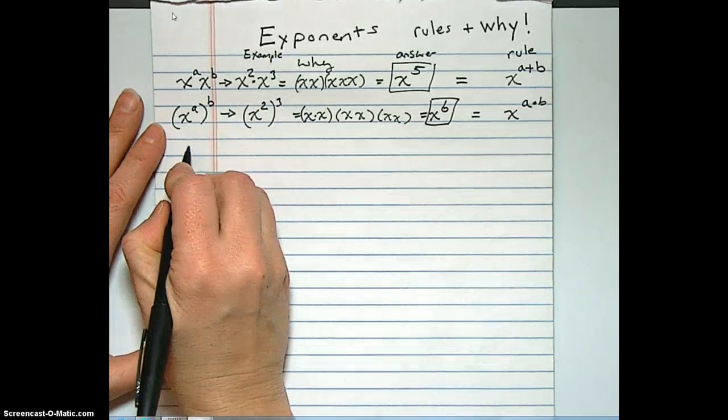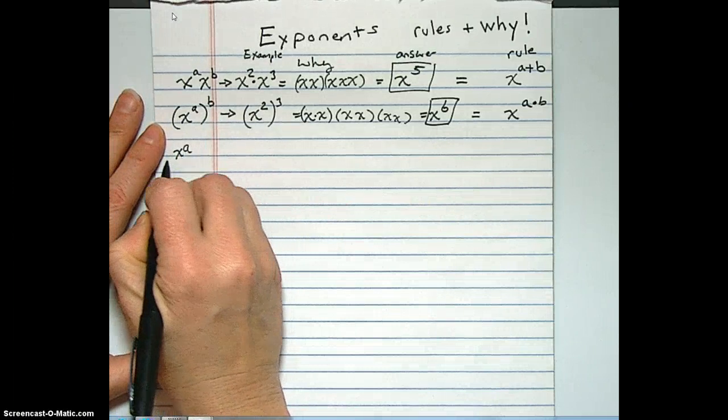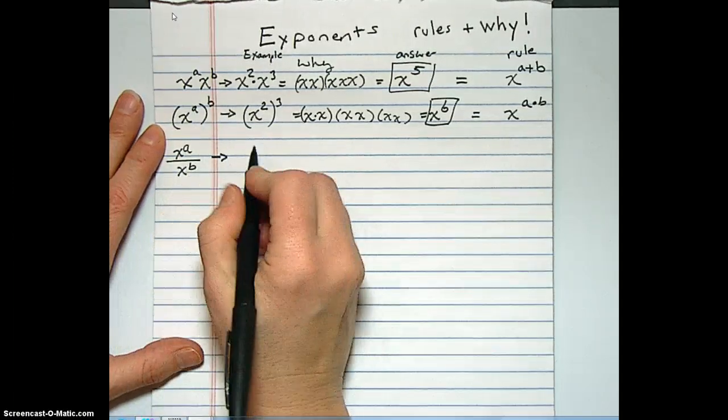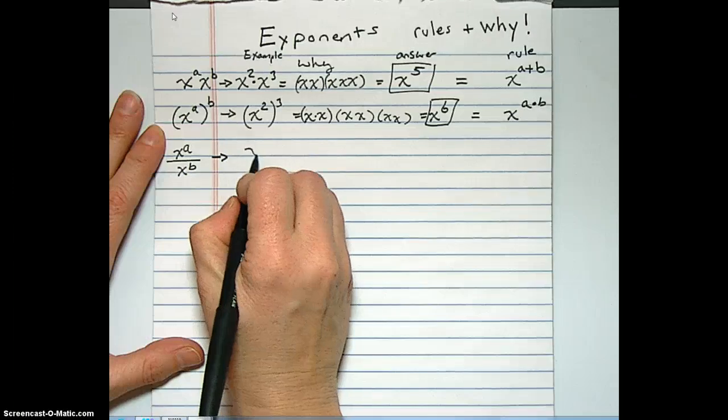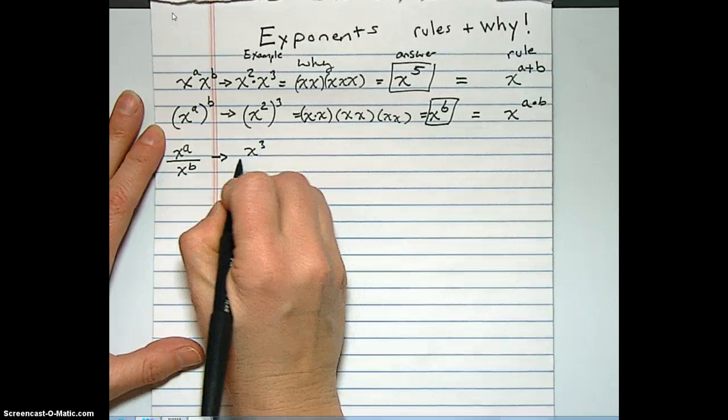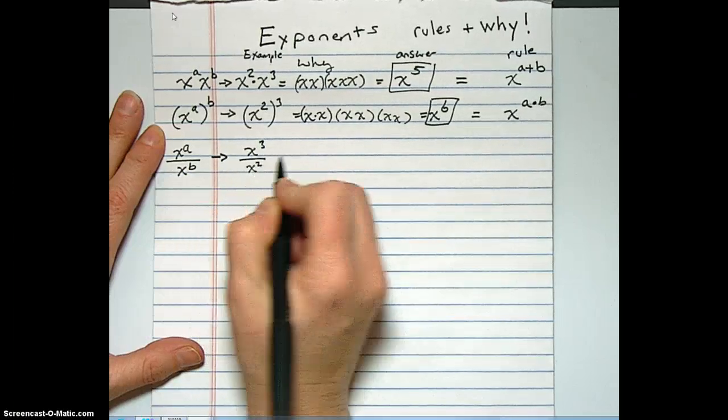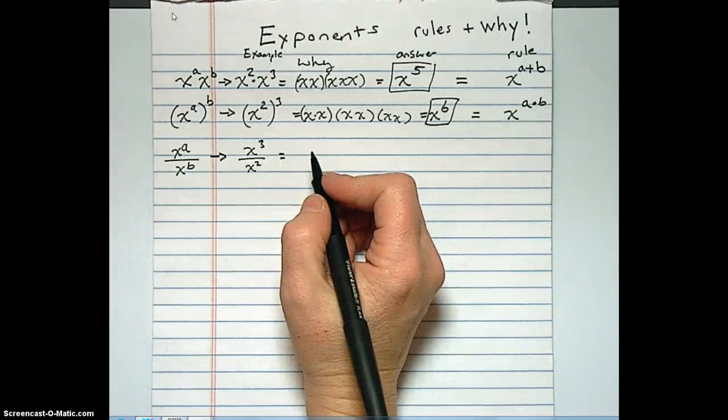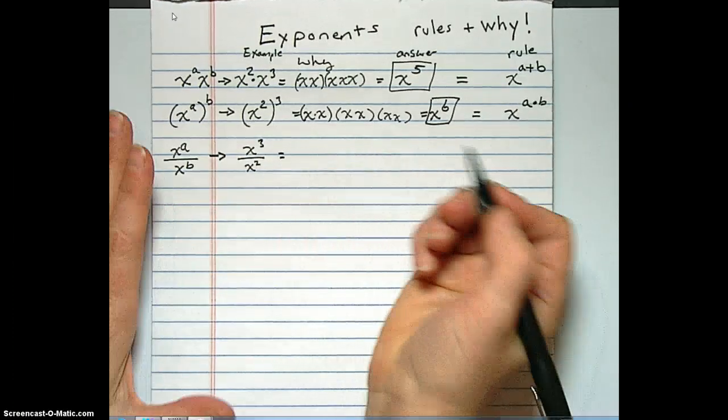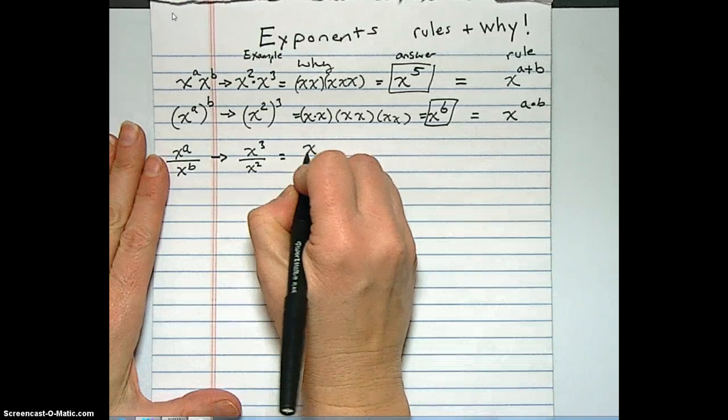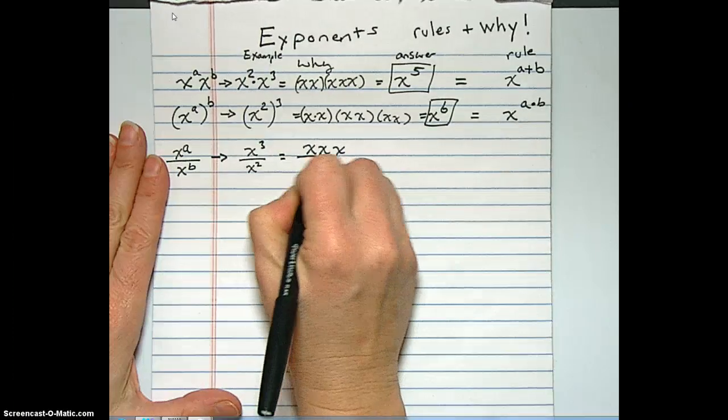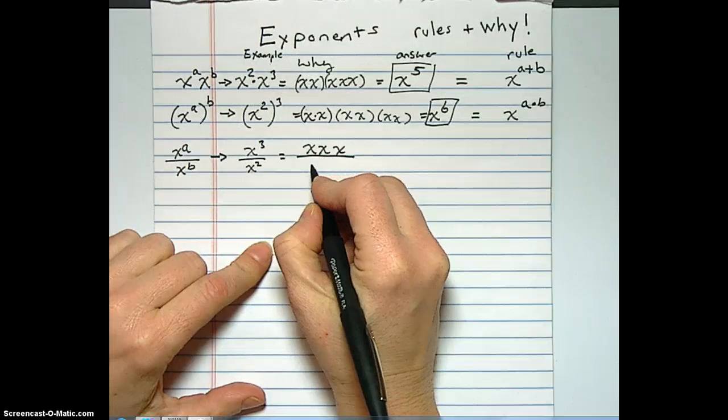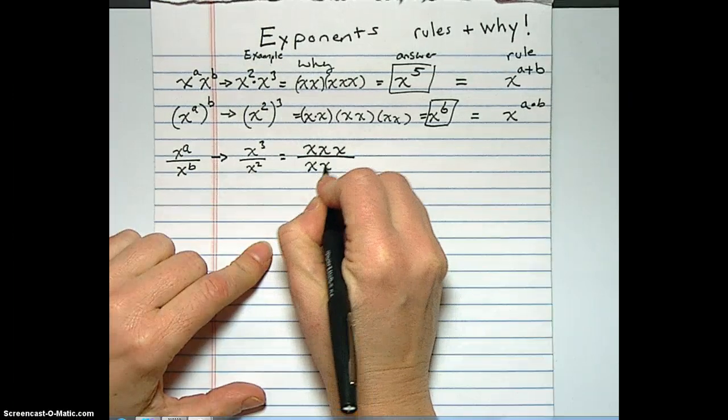All right, next is x to the a divided by x to the b. I'm going to give you an example. Let's do x to the third over x to the second. And x to the third means, what does that mean? Three x's. Okay, there's three x's in a row multiplying times each other. So x, x, x. And then the x squared.